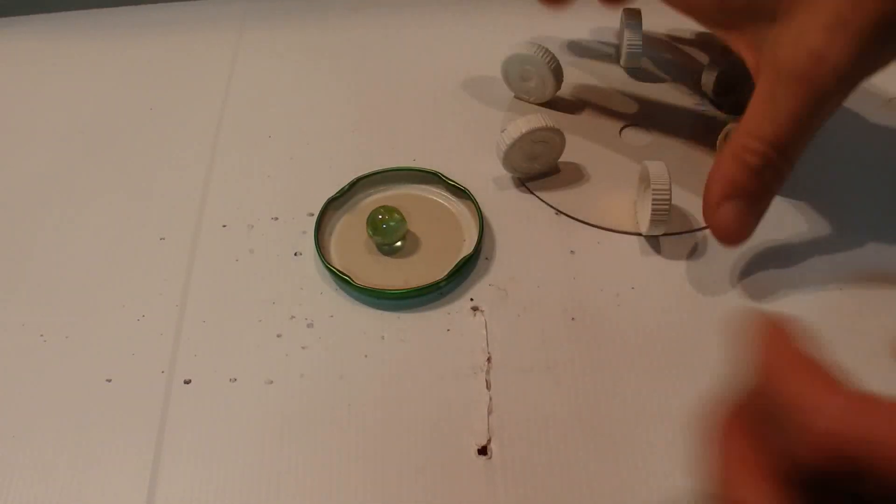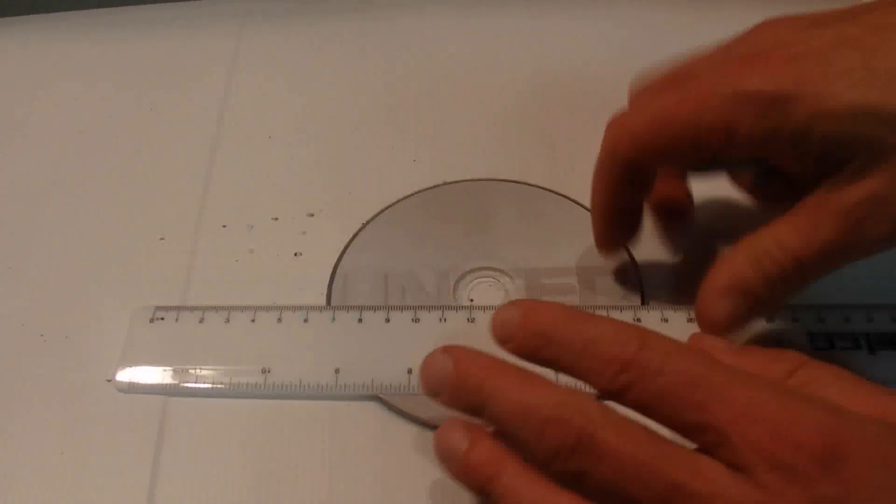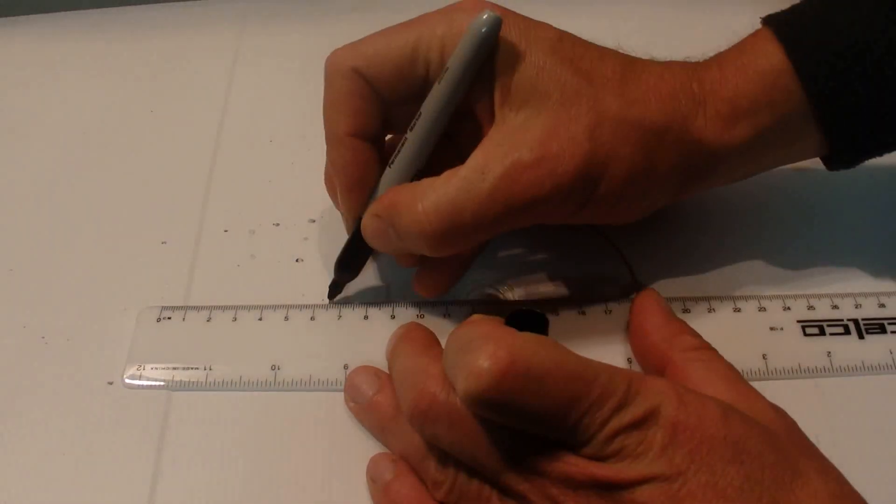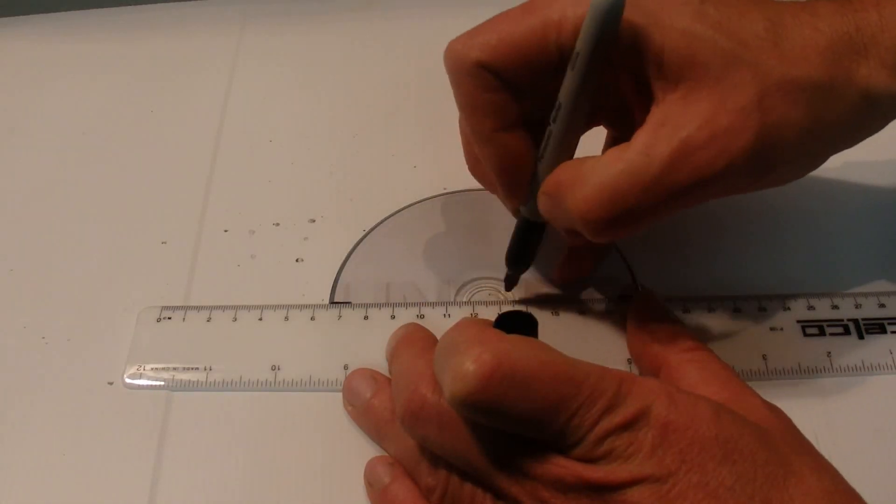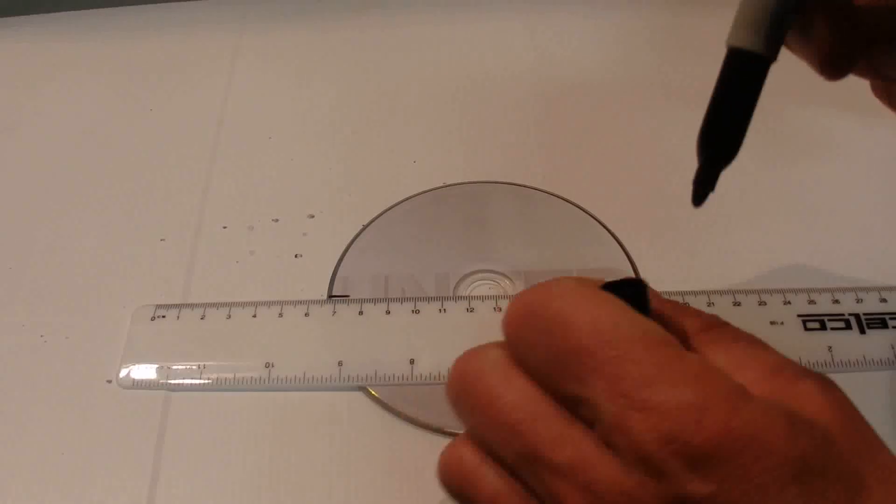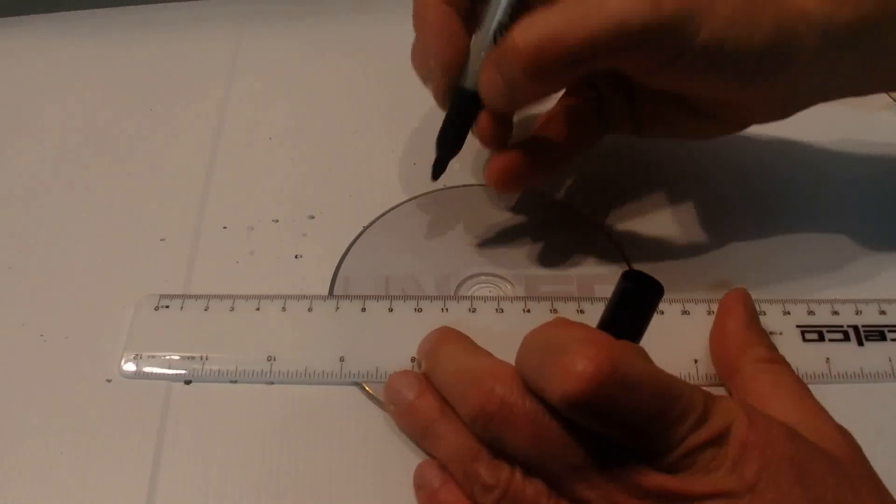So to start with, I've got an old CD and first I'll just draw like two marks that go directly through the middle there, so that's two that are opposite, and I'll just put a little mark there in the center as well.